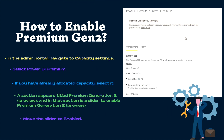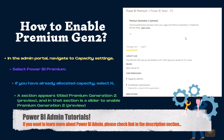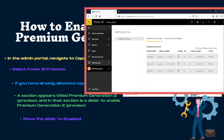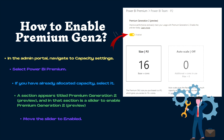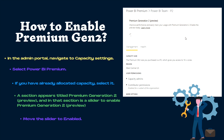Now let's see how you can enable Power BI Premium Gen 2. As you can see on my screen, to enable Power BI Premium Gen 2, you first have to go to the admin portal and navigate to the capacity settings. Under that you will get an option for Power BI Premium — select it. If you have already allocated capacity, select it again. A section then appears titled Power BI Premium Generation 2 Preview, as you can see on my screen, with a slider to enable the Premium Gen 2 preview. You just need to enable it there, and that's all you need to do.